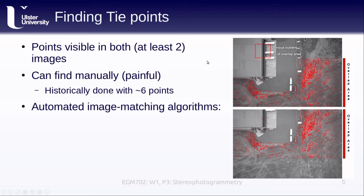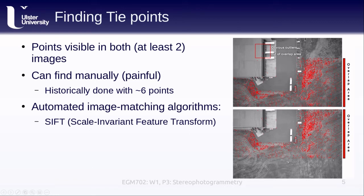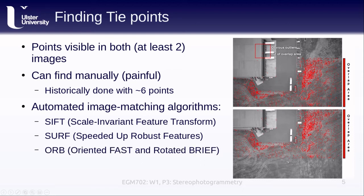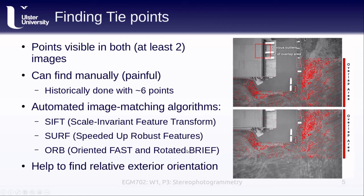There are a number of image matching algorithms in the literature. One of the main ones is SIFT, which stands for Scale Invariant Feature Transform. Another is SURF, or Speeded Up Robust Features. Still another is ORB, which stands for Oriented FAST and Rotated BRIEF — and as you might guess from that name, FAST and BRIEF are two other algorithm names. It's a bit of a matryoshka doll.